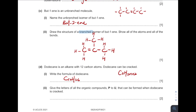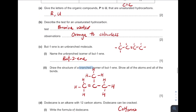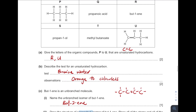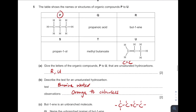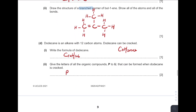Give the letters of all the organic compounds that can be formed when dodecane undergoes cracking. Remember, alkane undergoes cracking to produce alkane and alkene. So from the list, which ones are alkane and alkene? The answers are P, R, and U — these are all the possible products.